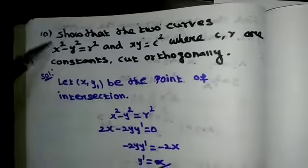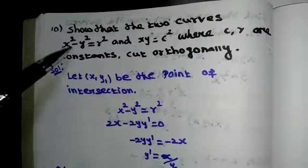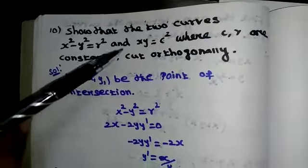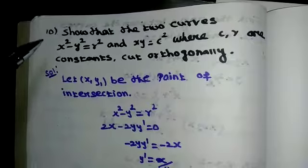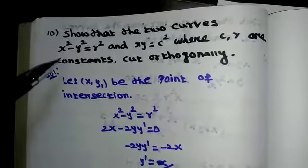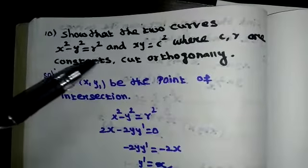Exercise 7.2, 10th sum. Show that the two curves x square minus y square is equal to r square and xy is equal to c square, where c, r are constants, cut orthogonally.